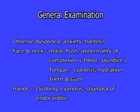General examination: observe dyspnea, anxiety, and halitosis. For the face and neck, look for malar flush and abnormalities of complexion like pallor and jaundice. For the tongue, look for cyanosis and hydration. Also look at the teeth and gums. For the hands, look for clubbing, cyanosis, and stigmata of endocarditis.